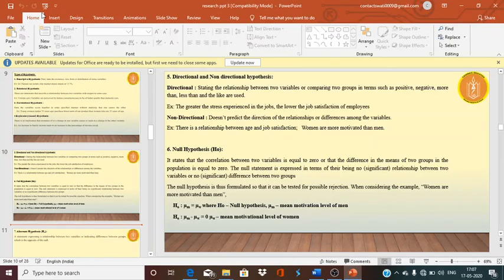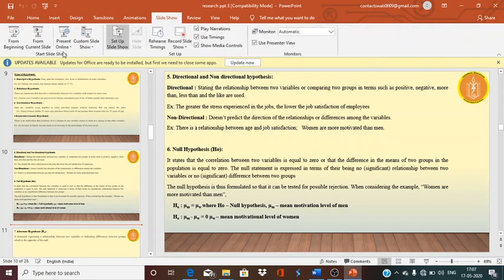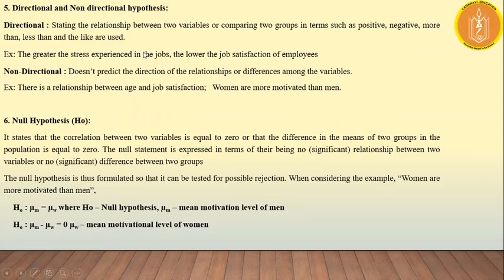In the last lecture we discussed types of hypothesis, including directional and non-directional hypothesis. In this video I will be discussing the null hypothesis and alternative hypothesis. The null hypothesis is represented by H-naught. It is a hypothesis which shows there is no significant relationship between the two variables. It is a tentative statement framed by a researcher in order to get rejected — the researcher makes it so that he can reject it and accept the alternative hypothesis.